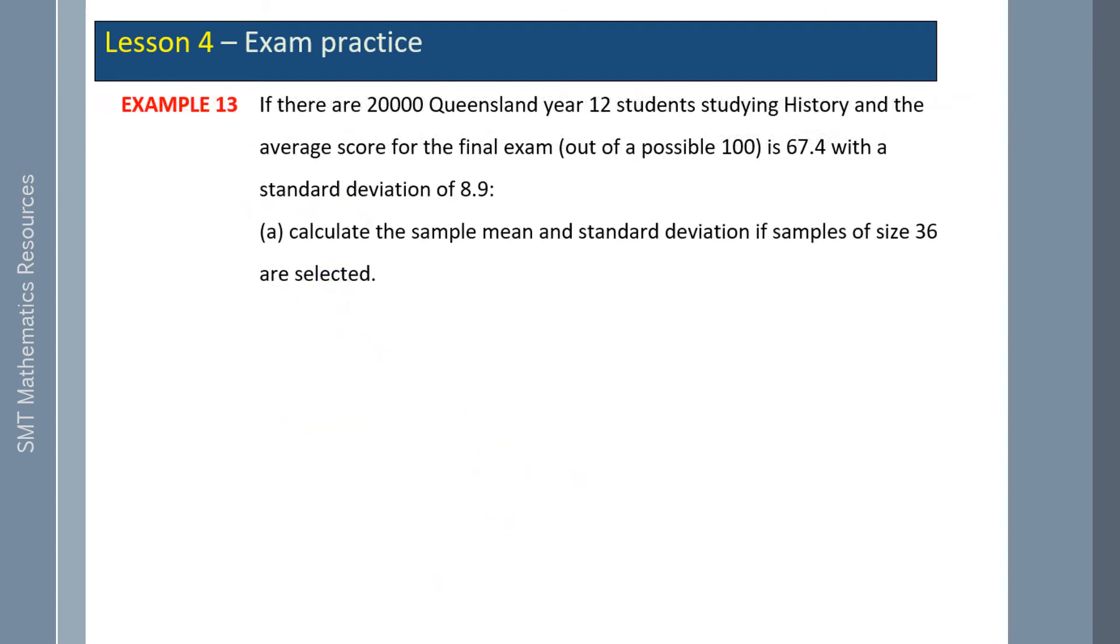If there are 20,000 year 12 students studying history and the average score for the final exam out of 100 is 67.4 with a standard deviation of 8.9, calculate the sample mean and standard deviation if samples of size 36 are selected. Note, this is a case where the population mean and standard deviation are known. So expected value of our sampling means is going to be mu, 67.4. Our standard deviation is sigma over the square root of n, which is 8.9 over the square root of 36, which is 1.4833.